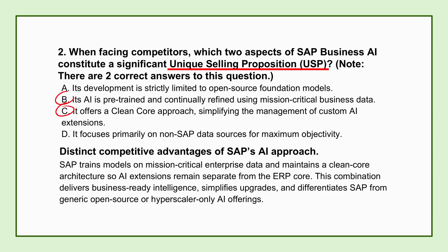All the custom AI extensions, custom logic, and new applications run externally, typically leveraging the SAP Business Technology Platform, BTP. So the real benefit is that if you upgrade your core S/4HANA system in five years, your custom AI logic doesn't suddenly break or make the upgrade incredibly complex — it stays decoupled. That drastically reduces technical debt and ensures system stability, which is paramount when dealing with sensitive financials or supply chain operations.